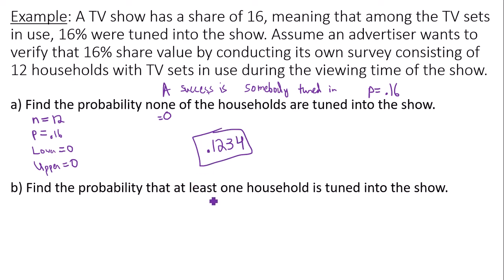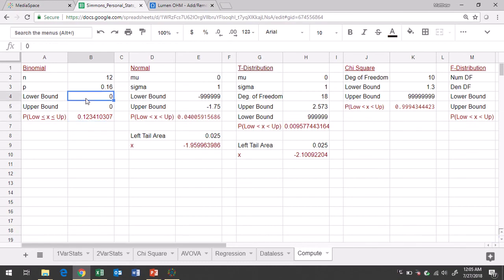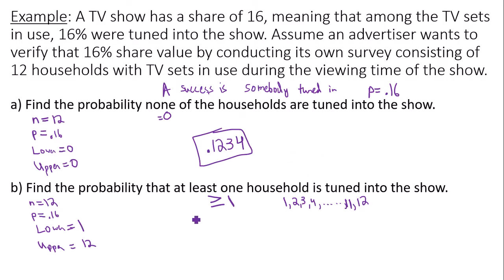Part B: find the probability that at least one household is tuned in — that means greater than or equal to one, so one, two, three, four, all the way up to 12. The number of trials is still 12, probability of success is 0.16, lower bound is 1, and upper bound is 12. In Google Sheets with lower bound 1 and upper bound 12, we get 0.8766. So the probability that at least one household is tuned in is 0.8766.